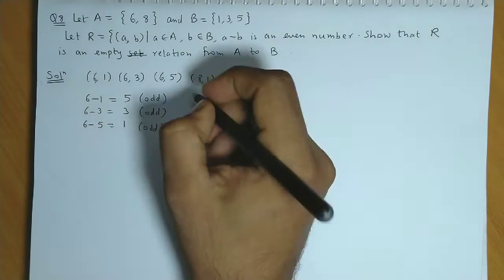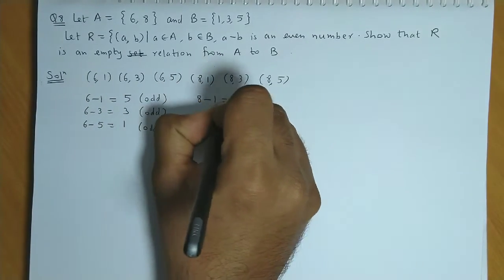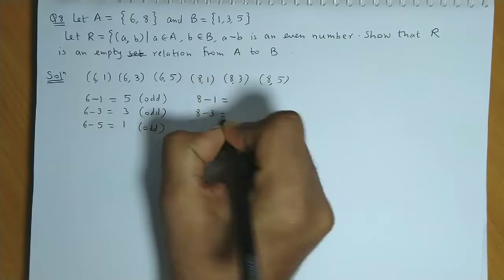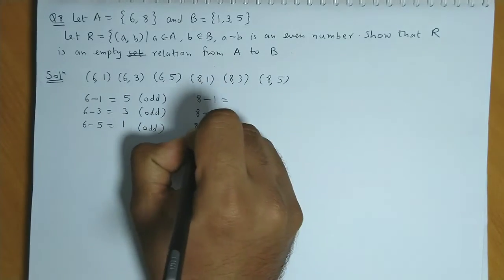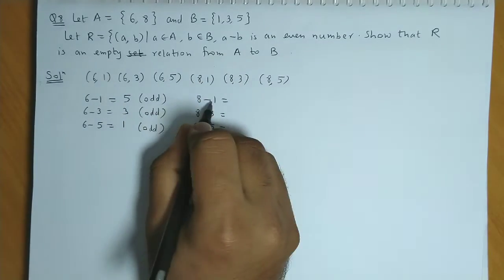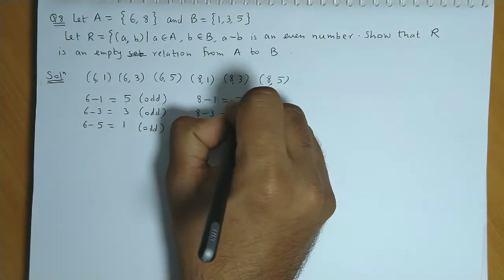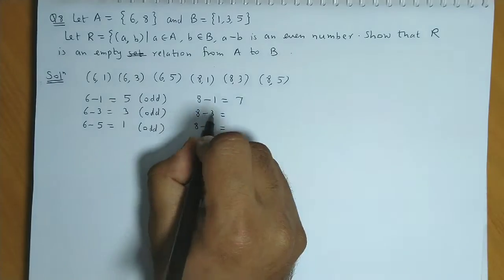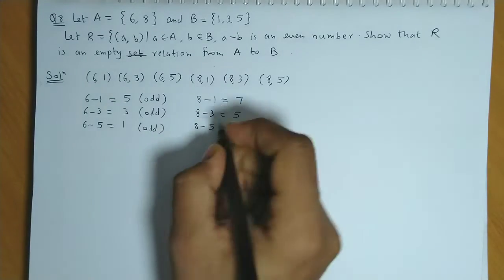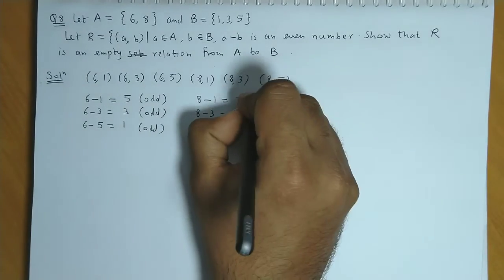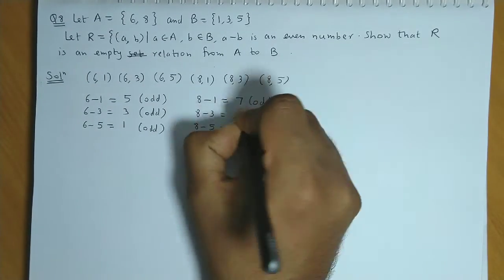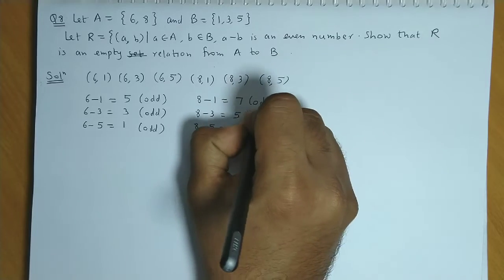Now we check the remaining differences. 8 minus 1 is 7, 8 minus 3 is 5, and 8 minus 5 is 3. So here we have all odd values.